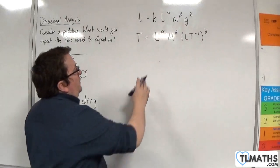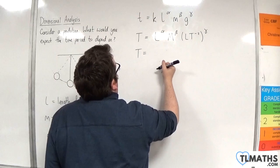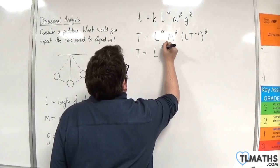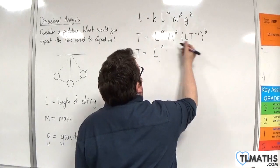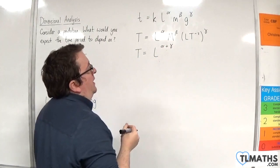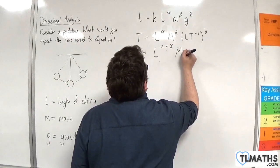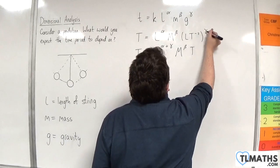What I'm going to do then is rewrite this. We've got L to the power of alpha, but I'm also multiplying it by L to the power of gamma. So L to the alpha plus gamma, adding the indices together. We've got M to the beta. And then we'll have T to the minus 2 times gamma.